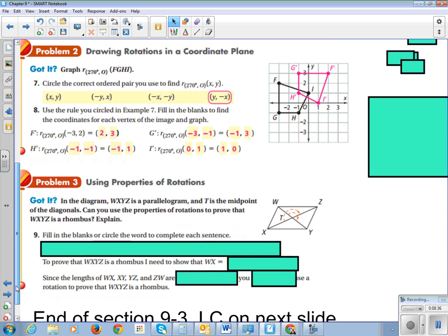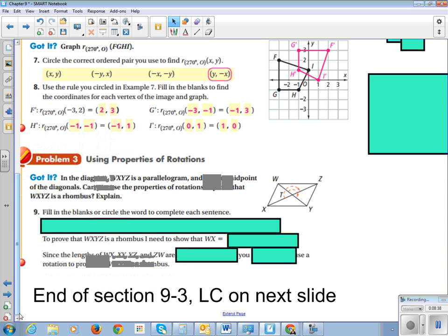All right, let's do another practice problem. In the diagram, WXYZ is a parallelogram. T is the midpoint of the diagonals. Can you use the properties of rotations to prove that WXYZ is a rhombus, and explain?